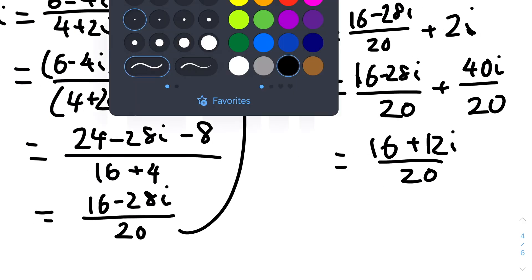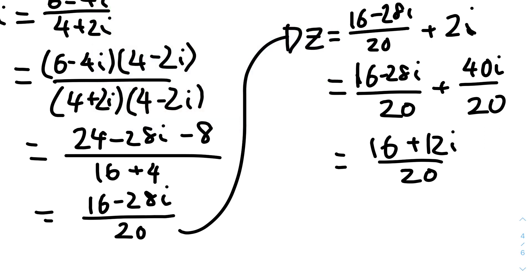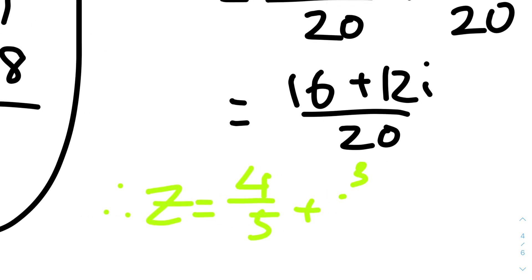We can now separate into real and imaginary parts and simplify. The real part is 16/20 = 4/5, and the imaginary part is 12i/20 = 3/5. So therefore z = 4/5 + (3/5)i, and that's the answer.